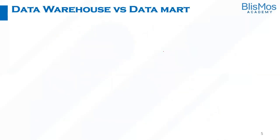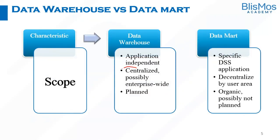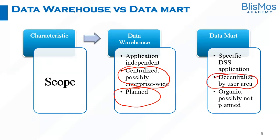We have learned about the data warehouse and the data mart. How are they different? In terms of scope, data warehouse is a centralized, possibly enterprise-wide system — we have only one data warehouse and building it is a planned effort, we may plan for a year or two. On the other hand, data mart is decentralized by user area, there will not be only one data mart for the whole organization, and it is specific to the decision support system. We may not plan the data mart from the beginning; organically, depending on which data is being queried more, we create the data marts.